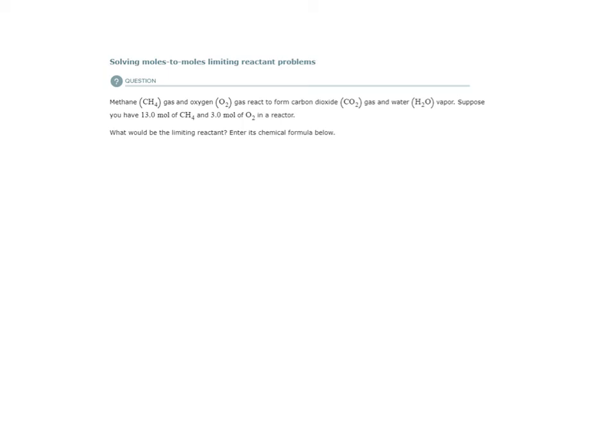Here's example two of the moles-to-moles limiting reactant problems. It says we have methane gas and oxygen gas reacting to form carbon dioxide gas and water vapor. Before we do any stoichiometry, we need to have a balanced chemical equation. Our reactants are methane gas reacting with oxygen gas to produce carbon dioxide gas and water vapor.